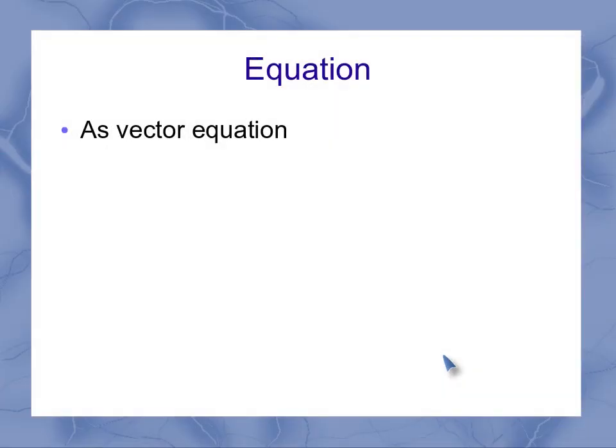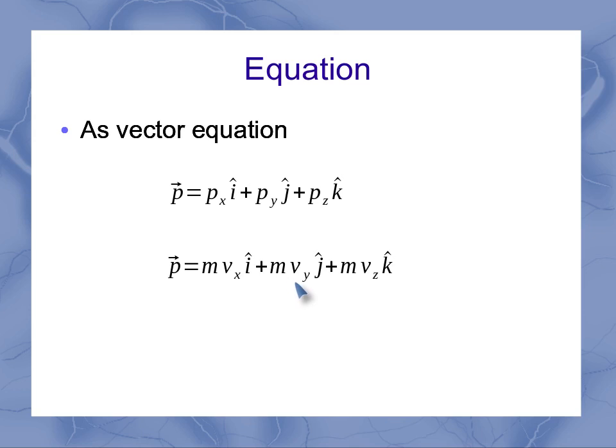If I was going to write this out as a vector equation, our vector equations use the i hat, j hat, and k hat to help show us the direction. And so we just have the individual components in each one of those directions. I could also write it out as the mass times the velocity for each one of the components.